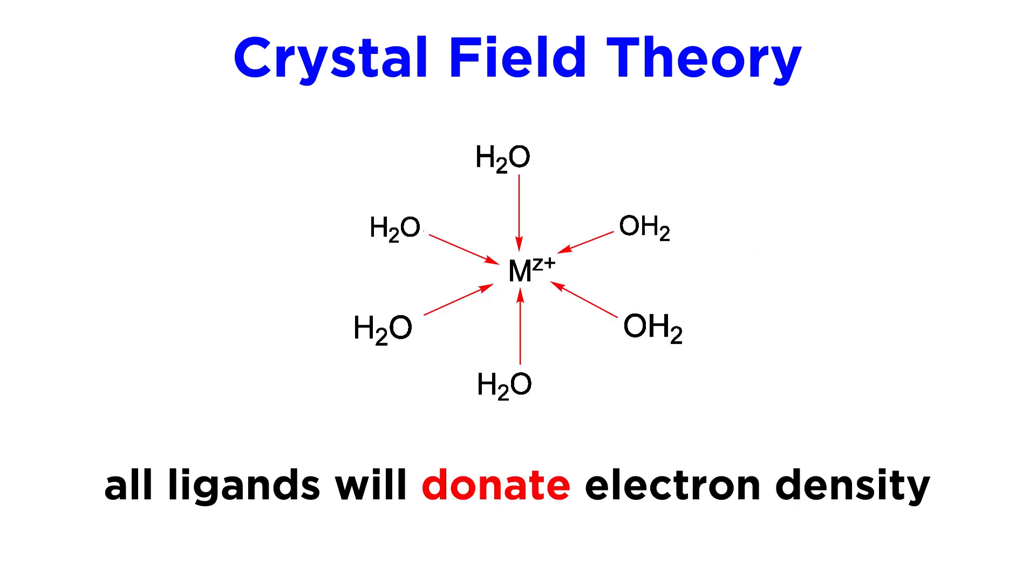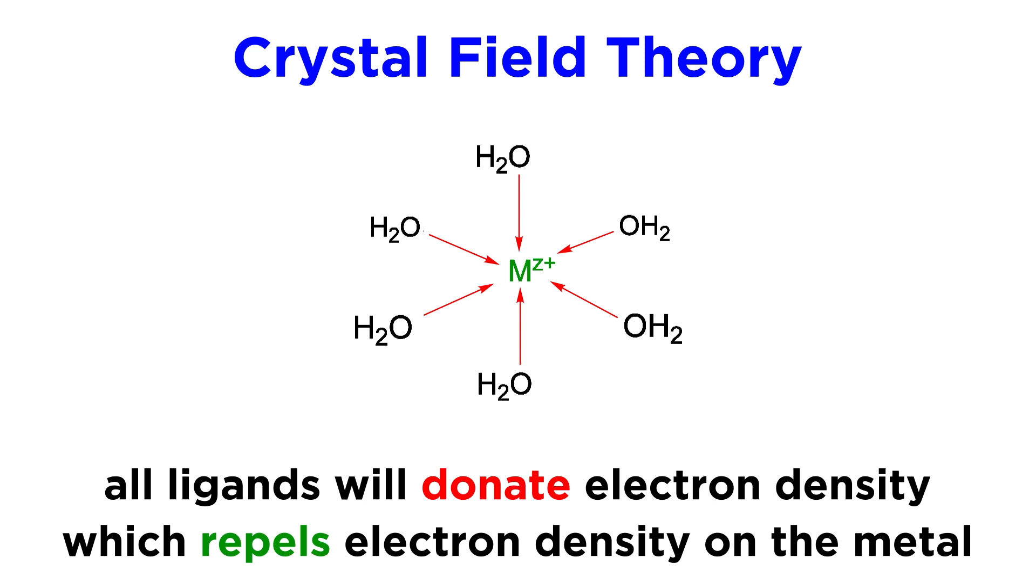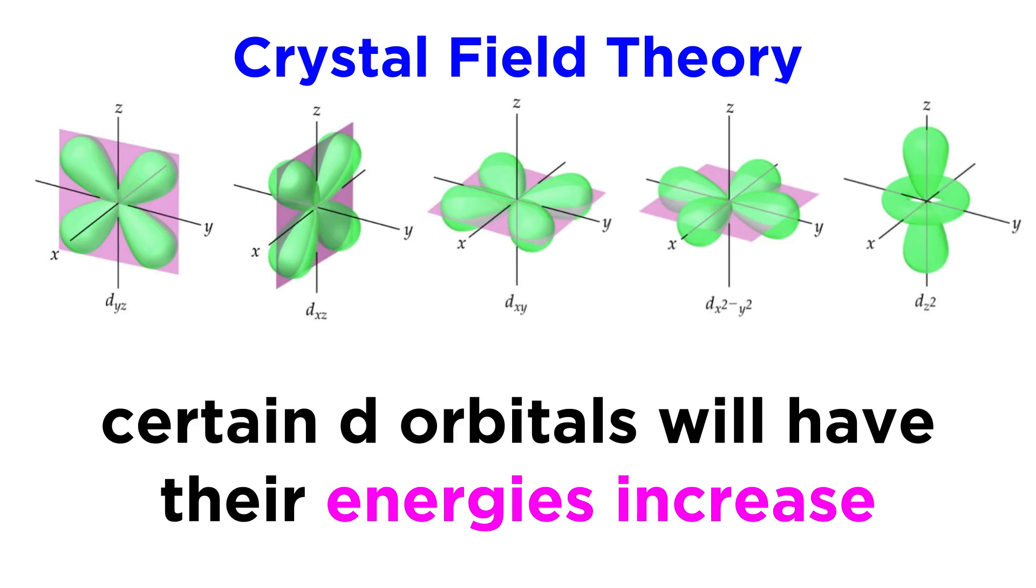The first thing we must understand is that ligands all have excess electron density that they are donating to the metal ion, and this electron density will repel existing electron density on the metal ion. Due to this repulsion, the energy of certain d orbitals will be increased, and not in an equal manner.